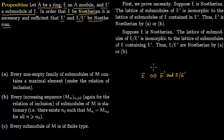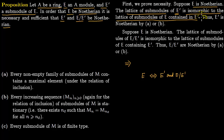First we will prove necessity, so we assume that E is Noetherian. The lattice of submodules of E prime is isomorphic to the lattice of submodules of E contained within E prime, since E prime is a submodule of E. Therefore E prime is Noetherian by condition A or B.